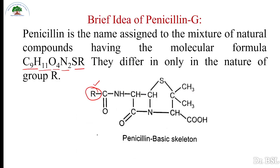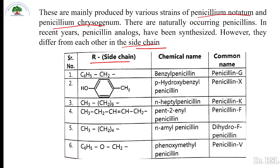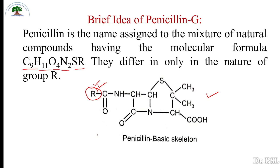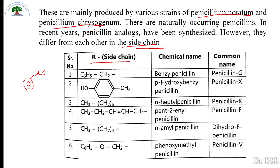Looking at the basic skeleton of penicillin, the value of R is given in this table. When R is C6H5CH2 — that is one benzene ring and CH2 — and this group is attached, it becomes penicillin G.